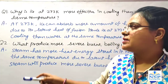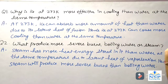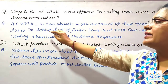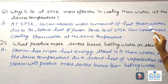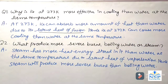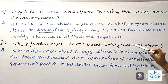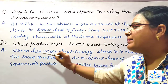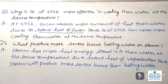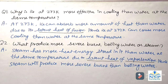Question: Why is ice at 273 K more effective in cooling than water at the same temperature? At 273 K, ice can absorb more heat than water due to its latent heat of fusion. Hence, ice at 273 K can cause more cooling than water at the same temperature. What produces more burns: boiling water or steam? Steam has more latent heat stored in it than water at the same temperature due to latent heat of vaporization — hence steam will produce more burns than boiling water.